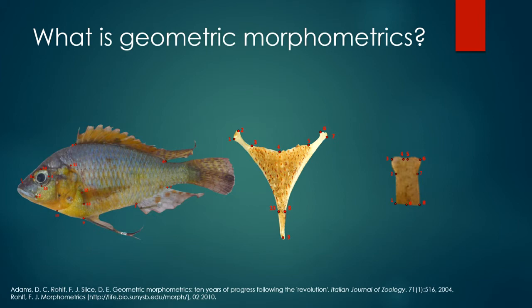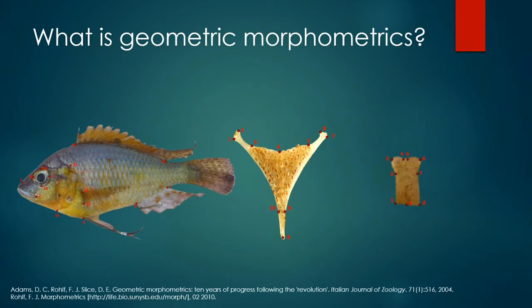There are three types of landmarks. First, true landmarks, which have some biological significance — for example, the origin of the dorsal fin. Second, pseudo landmarks, which are defined by relative locations, such as the point of highest curvature. And then there are semi landmarks, which are defined by a location relative to other landmarks, such as midway between landmarks one and eight would be landmark nine.